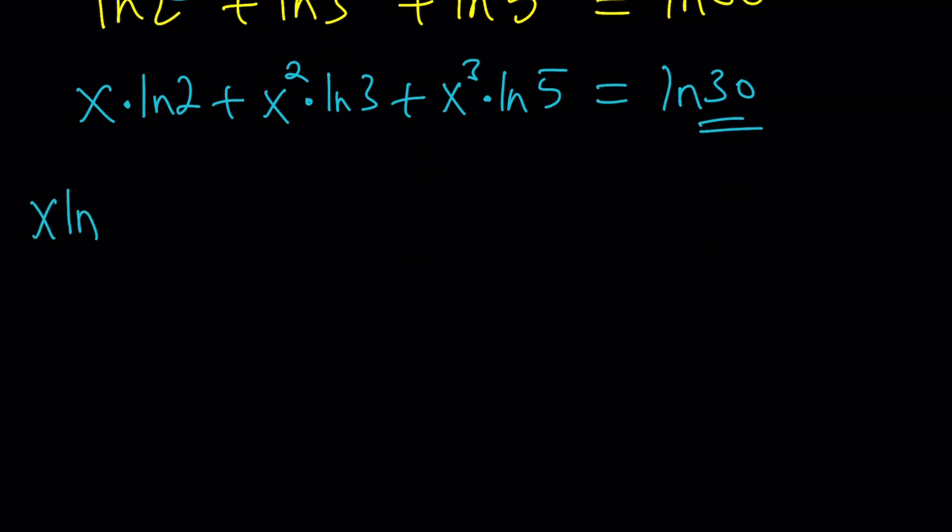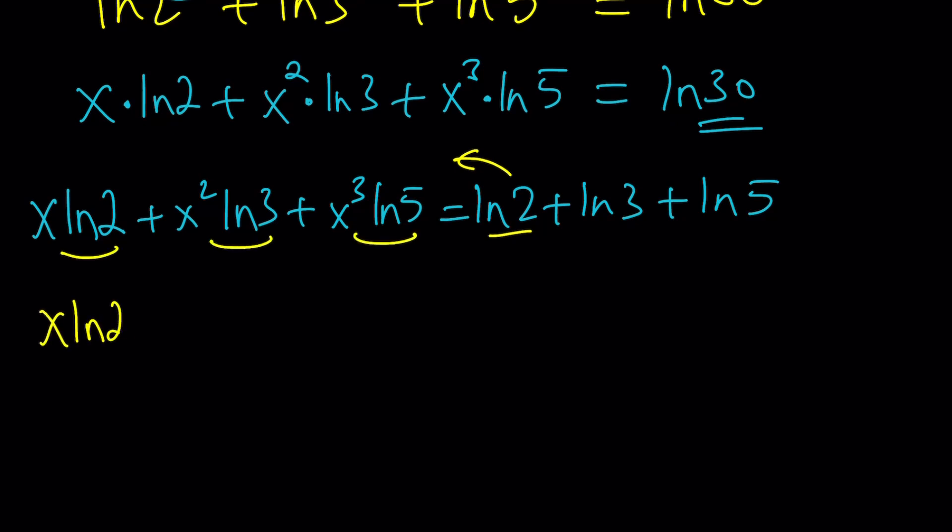But there's a better way to approach it, by breaking down the ln 30. So, we can write this as x ln 2 plus x squared ln 3 plus x cubed ln 5 equals ln 2 plus ln 3 plus ln 5. Remember, that's what ln 30 is. And then, bring all these things to the left while subtracting term by term. So, in other words, we can write this as x ln 2 minus ln 2 plus x squared ln 3 minus ln 3. You see what I'm talking about? Plus x cubed ln 5 minus ln 5, and the whole thing is equal to 0.